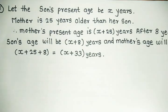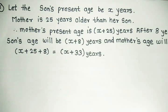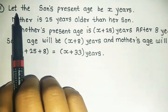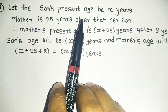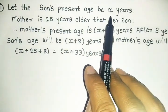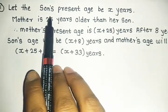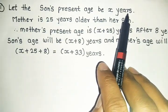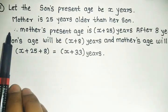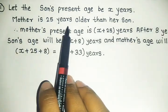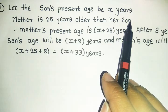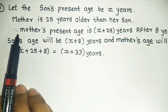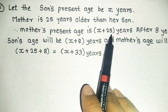In the question, we have the given condition. What do we need to find? Son's present age. So let the son's present age be x years. What we need to find, we consider as x. The given condition is mother is 25 years older than her son. Therefore, mother's present age is x plus 25.